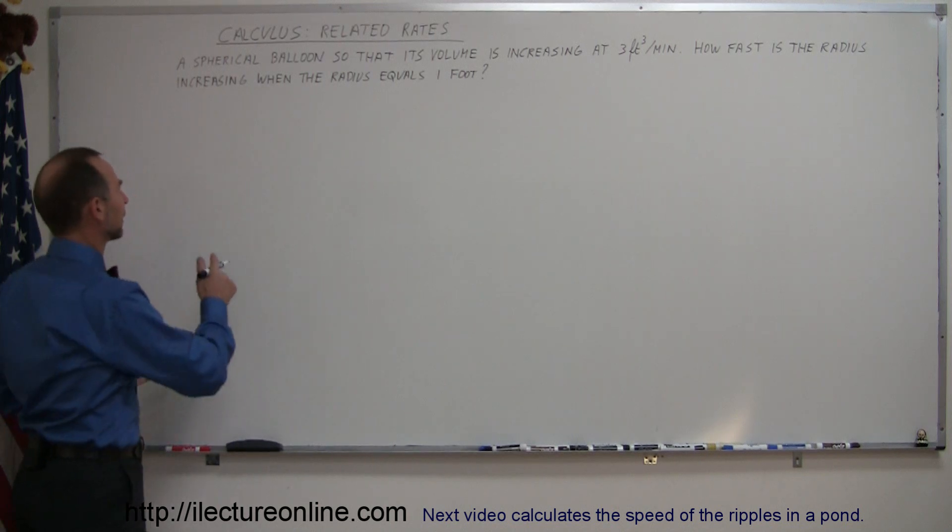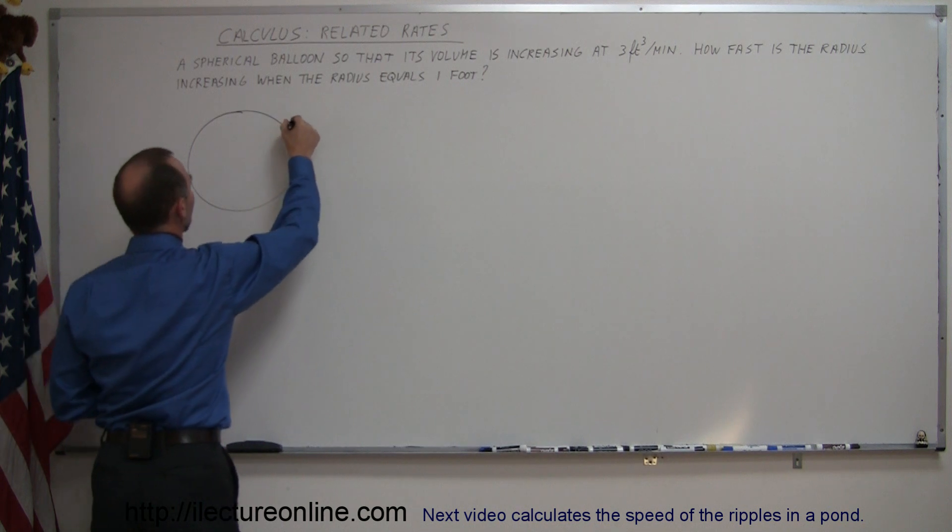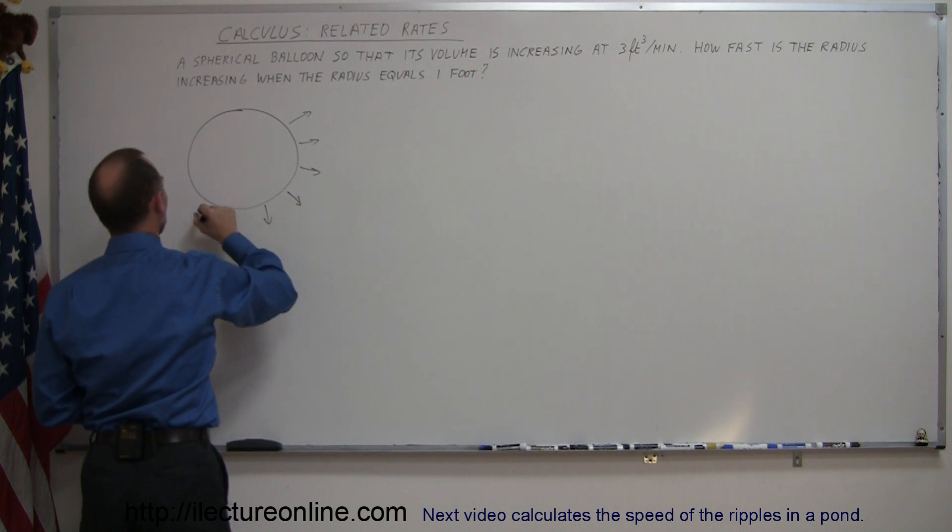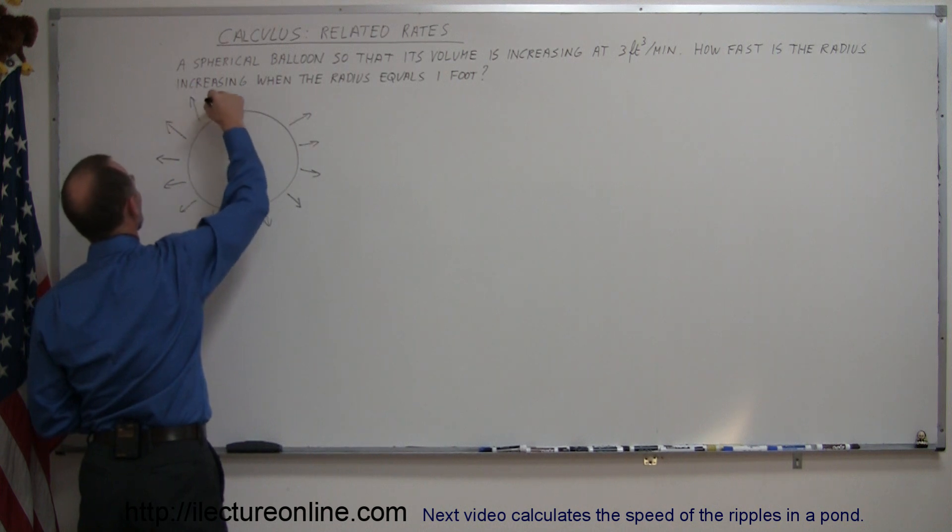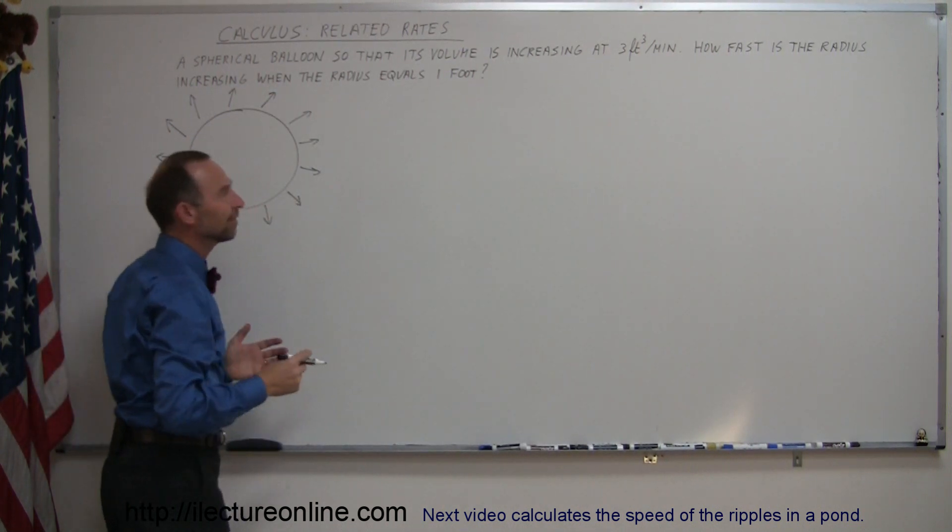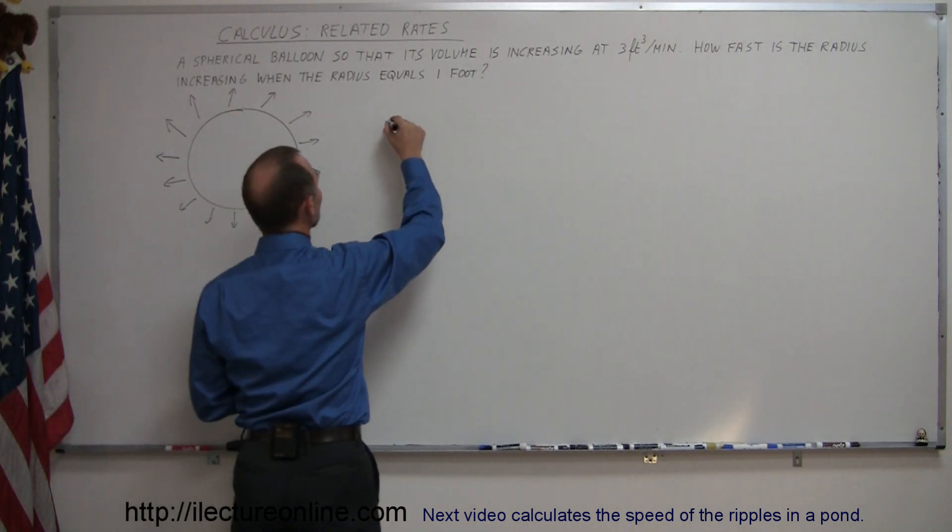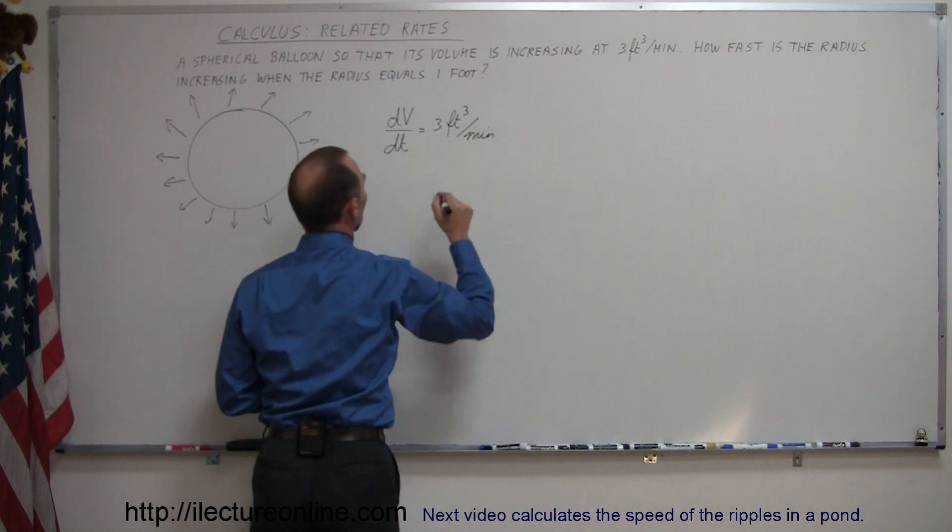So what's going on here? Well, let's draw a balloon. Here it is, the balloon. We're putting air in the balloon so that the balloon is expanding. And the amount of the expansion in volume per minute is the same, it's a constant value. So you have to somehow relate that into a mathematical expression. So it's the change in volume per unit time. We can say that the dV/dt, the change in the volume per time, is equal to 3 cubic feet per minute.